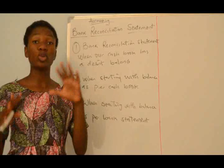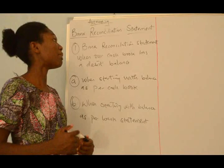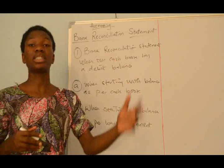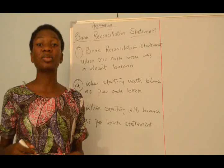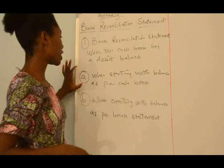We can also make our Bank Reconciliation Statement when starting with our Bank Statement Balance and we will still have the same answer. It is all about reconciling the Cashbook Balance and your Bank Statement Balance. The second aspect is when our Cashbook has a Credit Balance — that means we were owing the Bank, like an overdraft situation. The third aspect is our Adjusted Cashbook.